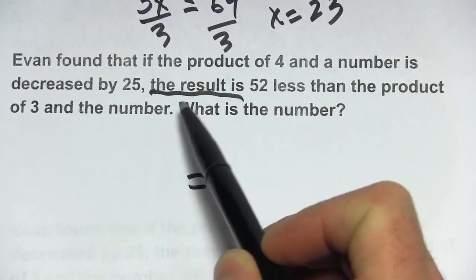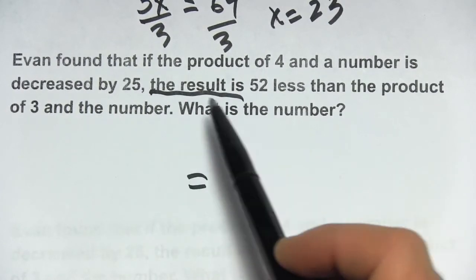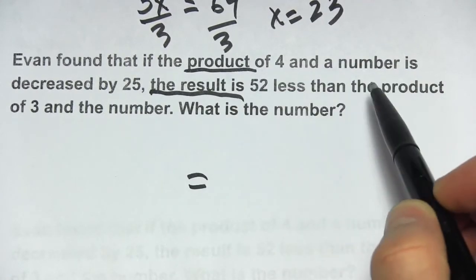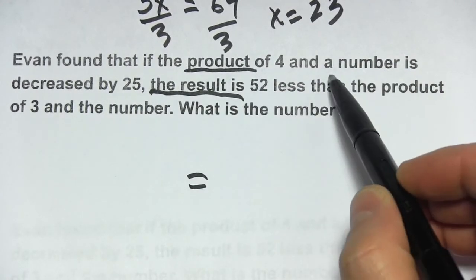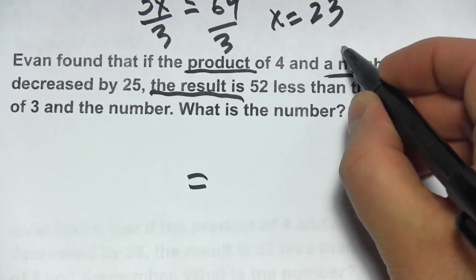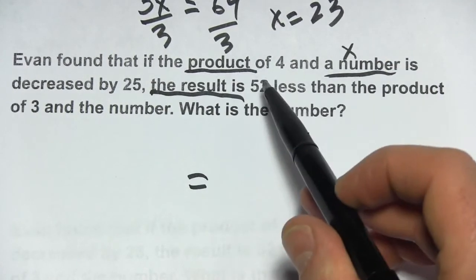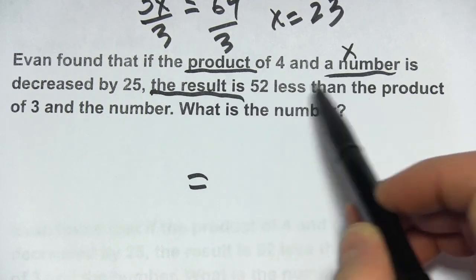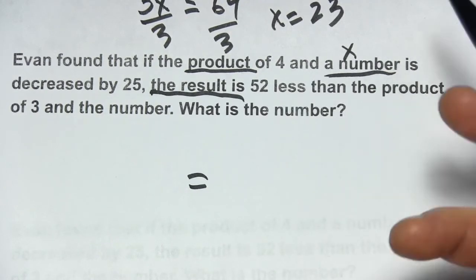Let's start with the left. To the left of this 'result is', it says the product—okay, that's multiplication—of 4 and a number. Well, a number, that's our keyword for our variable, so let's call that x. The product of 4 and a number, product means multiply, 4 and x, that's just 4 times x or 4x.